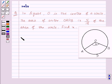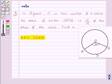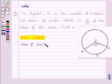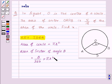Before moving on to the solution, let's see the key idea that we will use for this question. The area of a circle is given by pi R squared, where R is the radius of the circle, and area of sector of angle theta is equal to theta upon 360 into pi R squared. Here R is the radius of the circle.